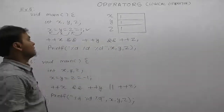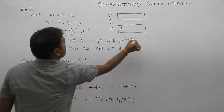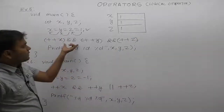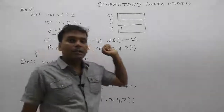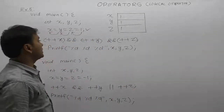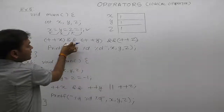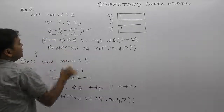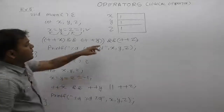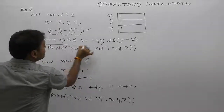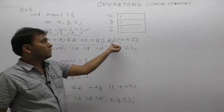Next, applying parenthesis: based on highest priority, plus-plus takes priority over logical operators. For the logical AND operator, associativity rule applies from left to right. The first operand is identified for the first AND, and the second operand for the second AND.